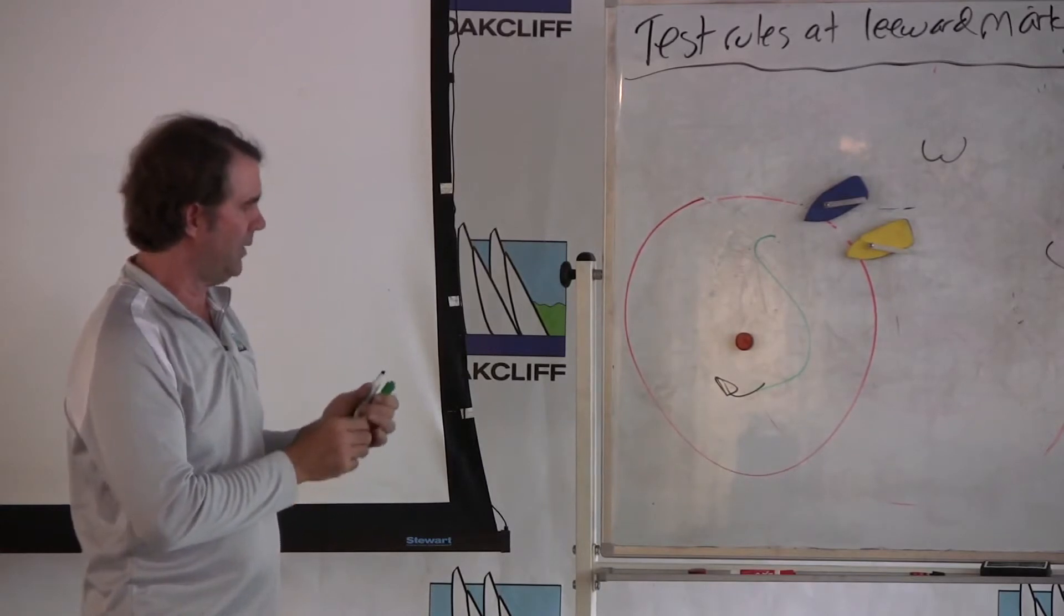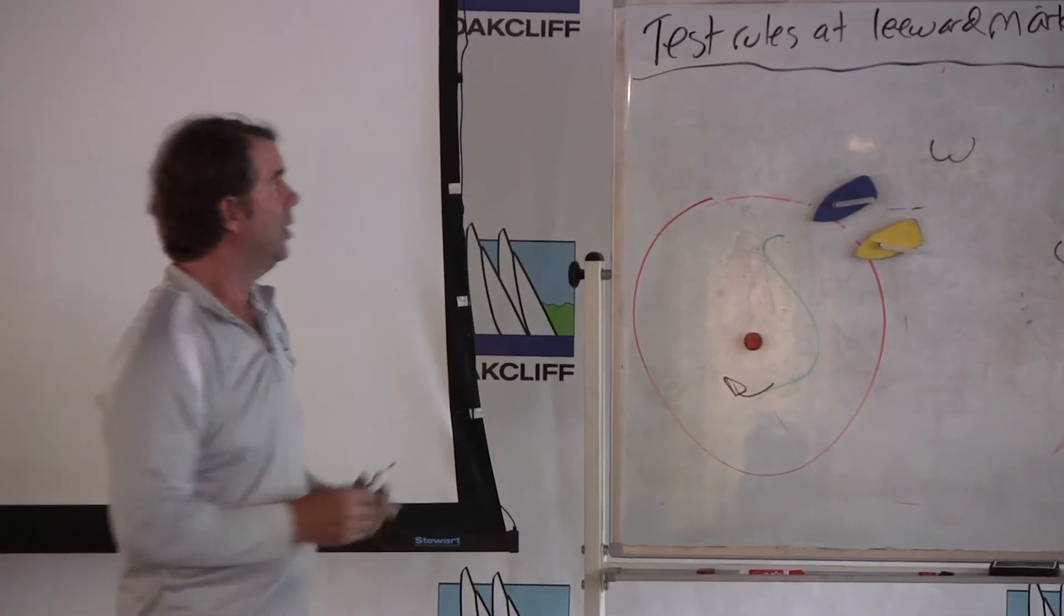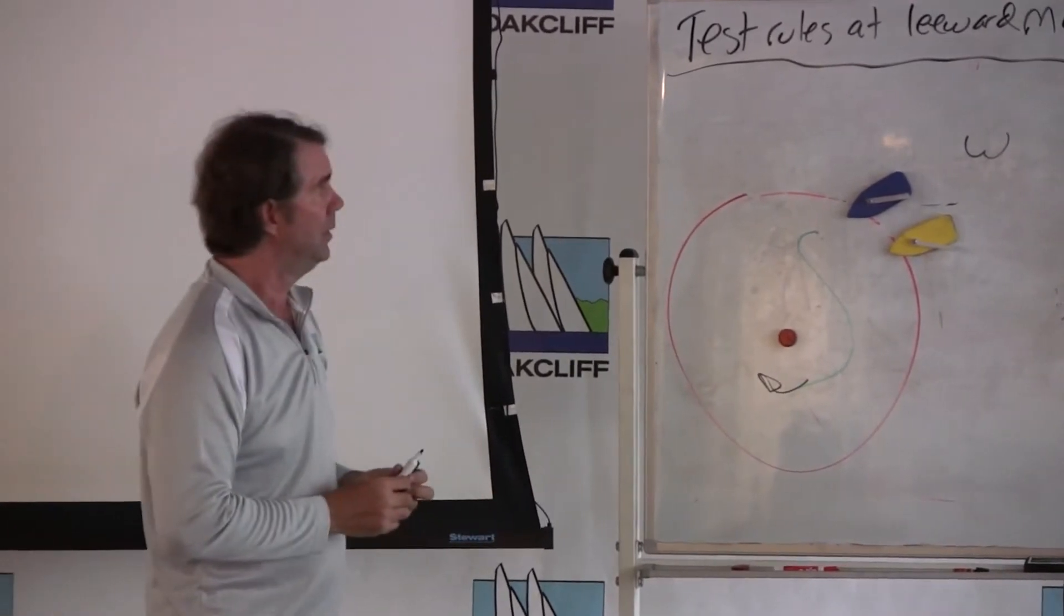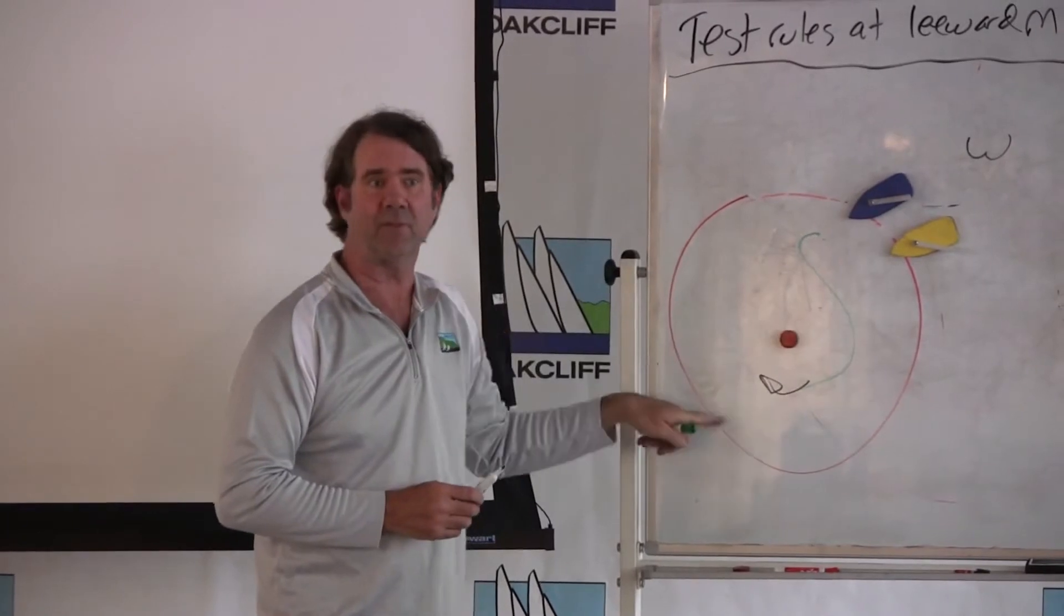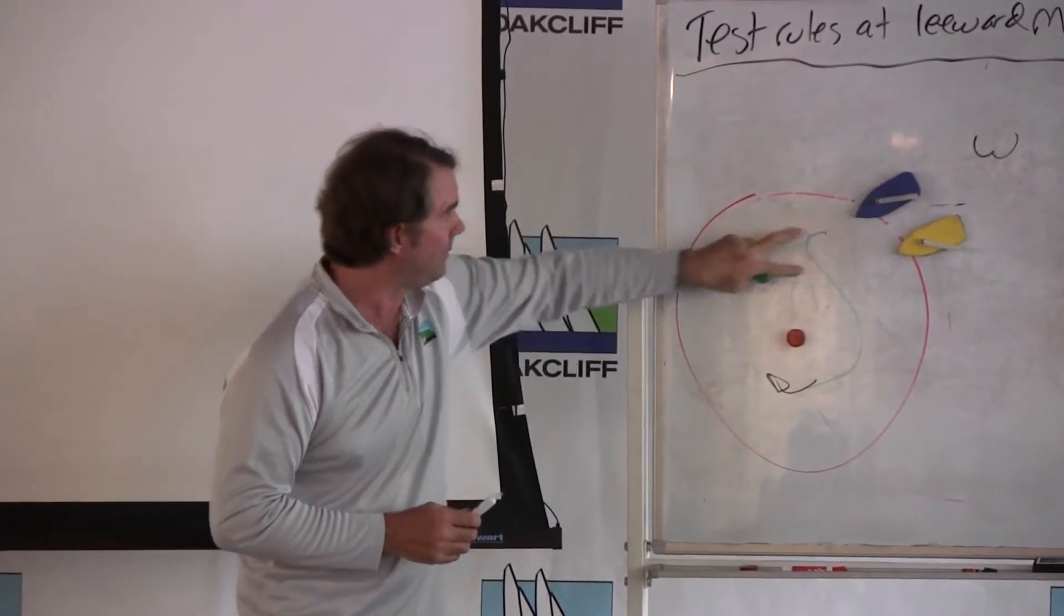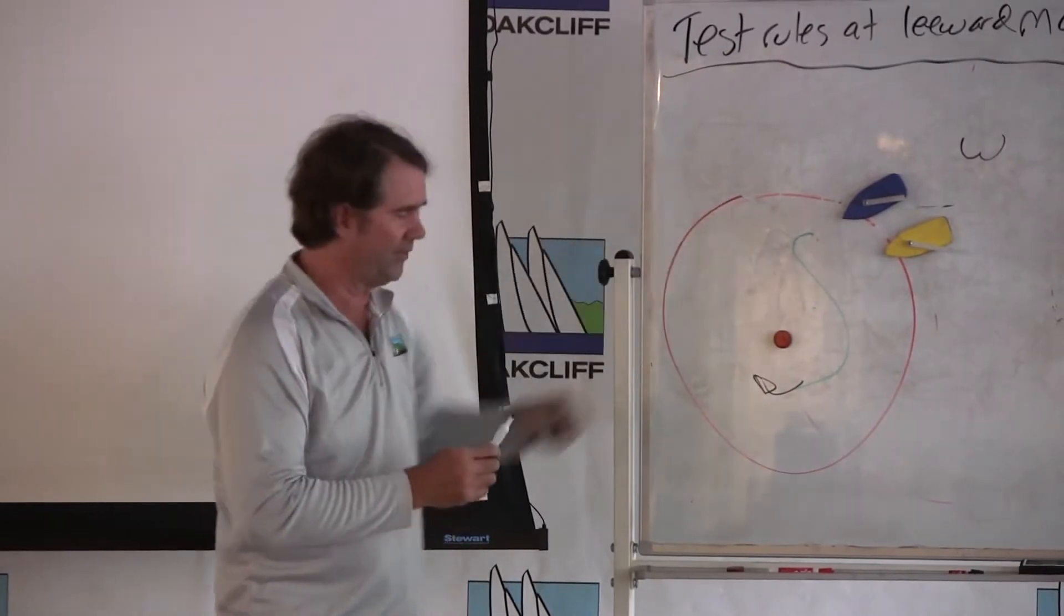Okay, again 18 turns on and asks, are the boats overlapped? The answer is obviously yes. The question is, who's the inside boat? Well, the inside boat is the boat that will be on the inside when they leave it to starboard. So even though they're both aiming on this side of the mark, that's irrelevant. Blue is the inside boat.